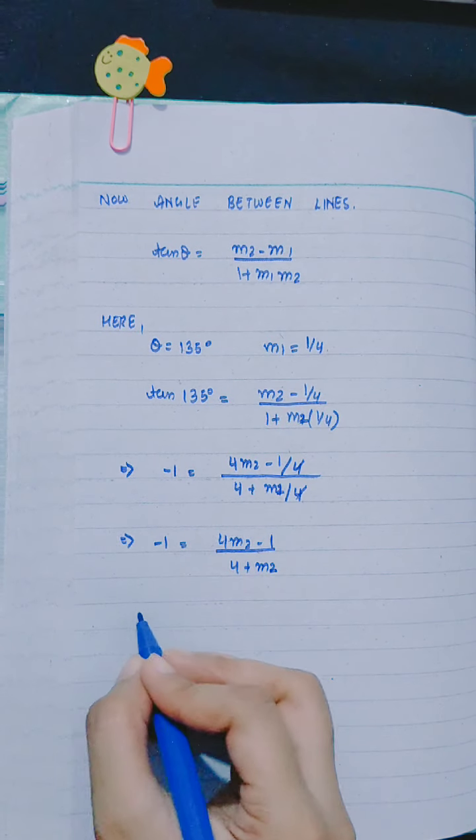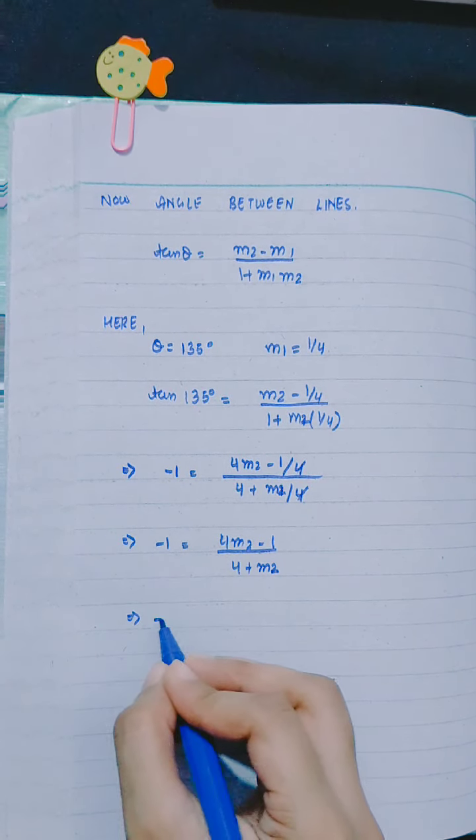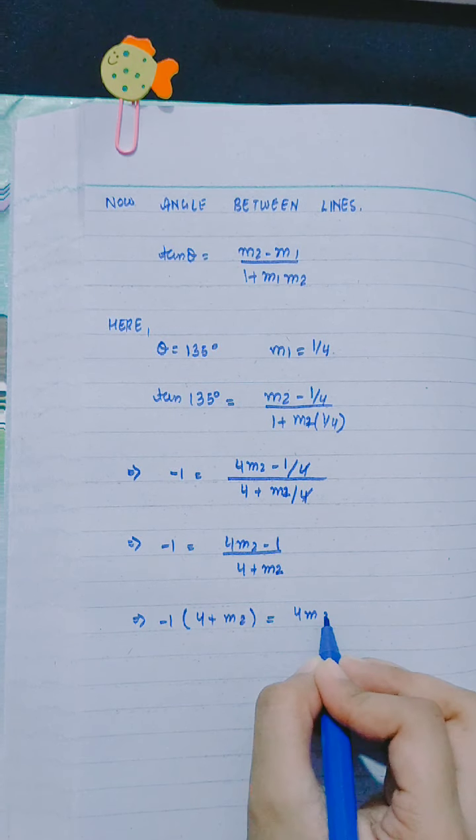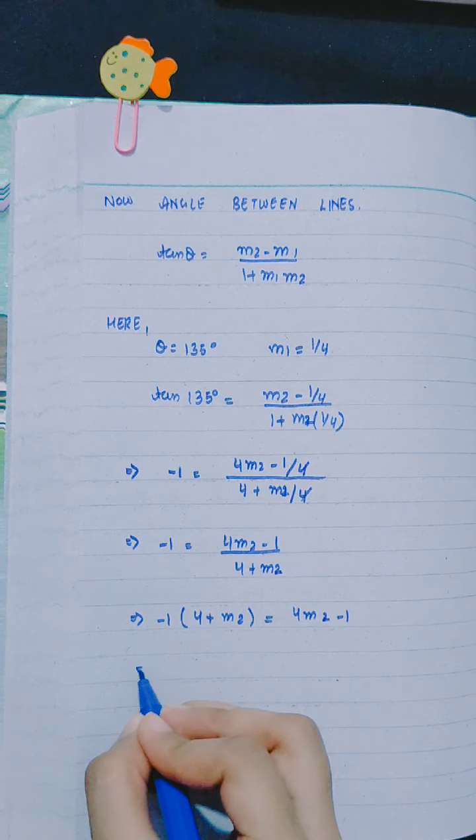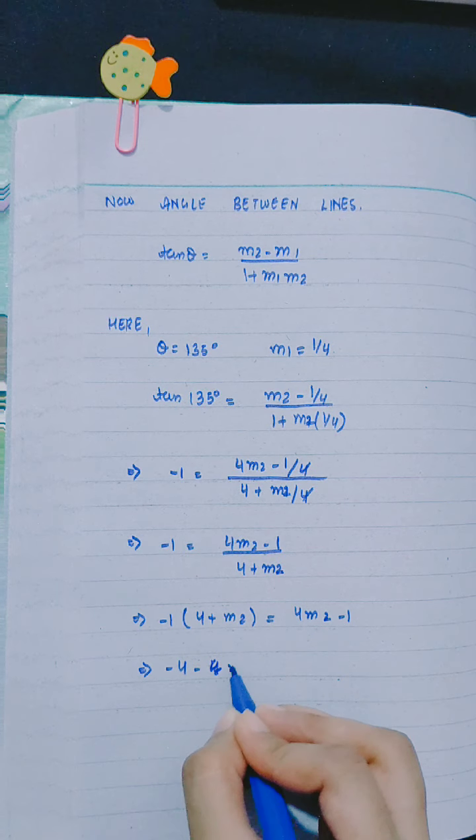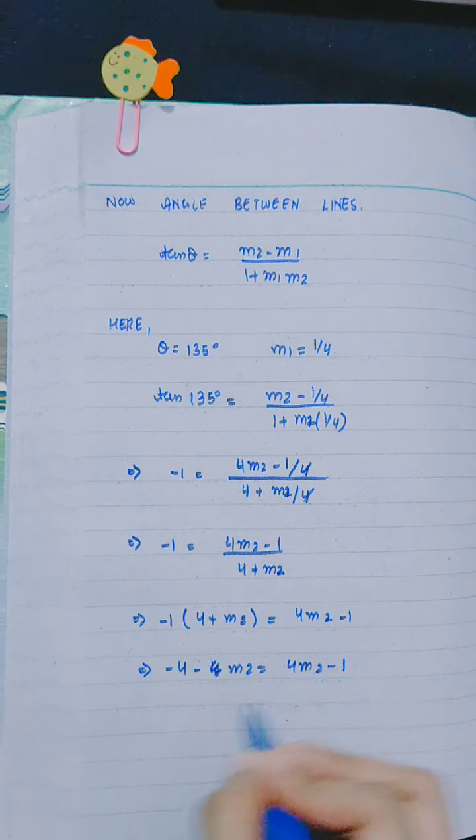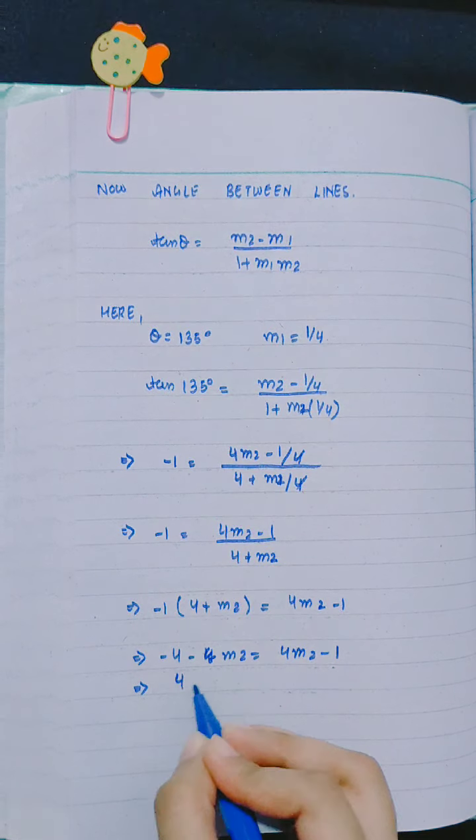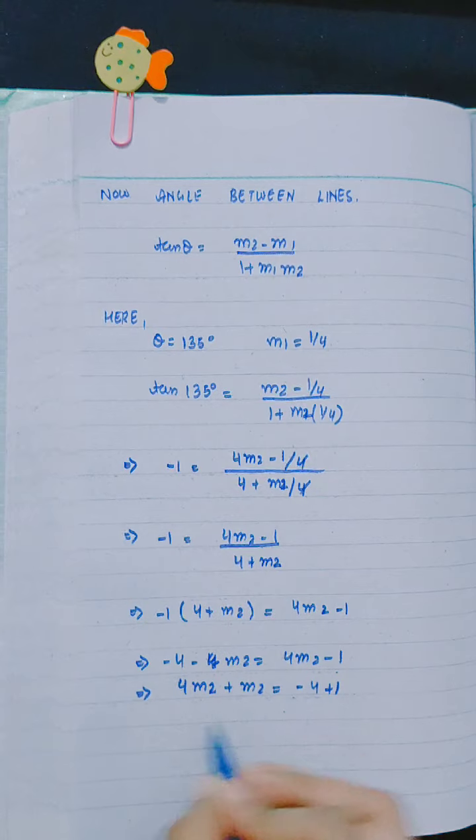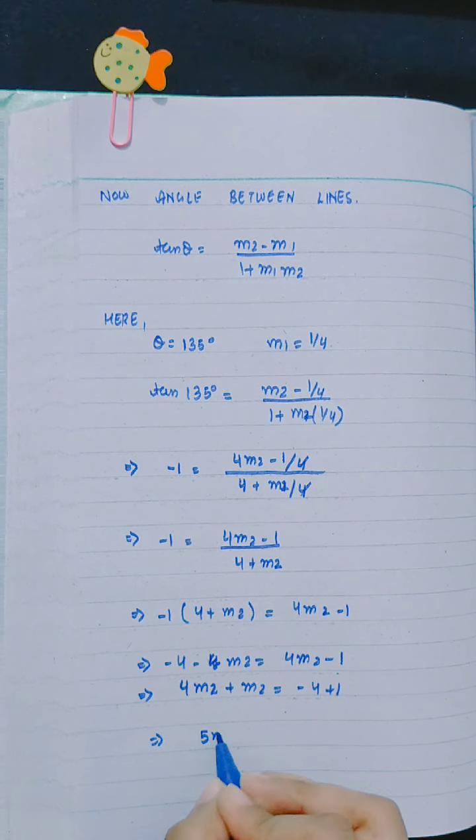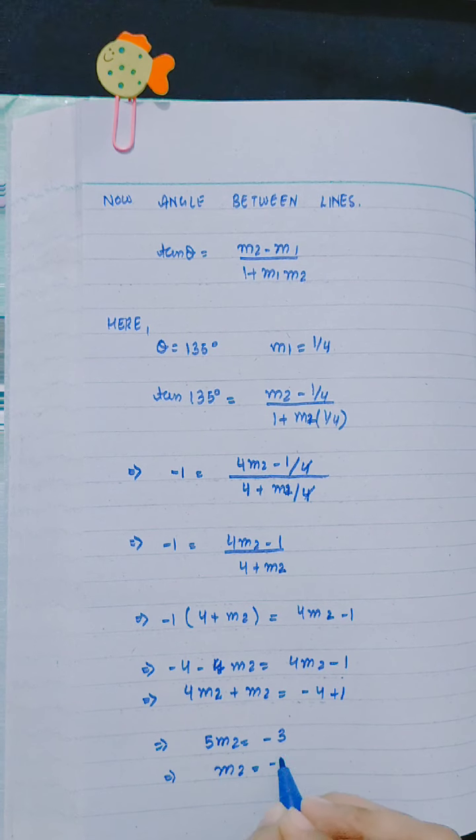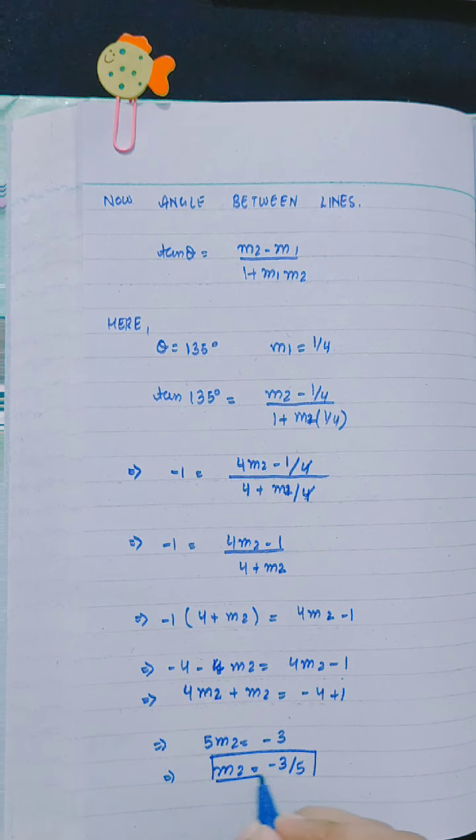Simplifying: 4 plus m2 divided by 4. We get m2 equals -3/5.